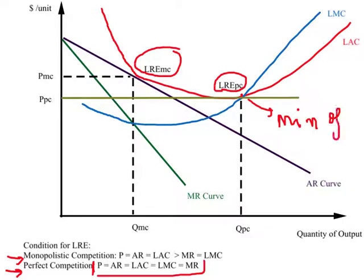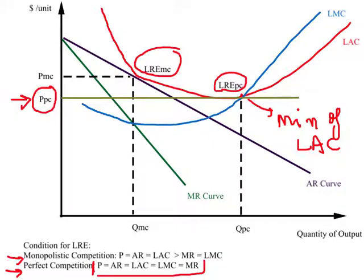Long-run equilibrium for a firm under perfect competition is at the minimum of LAC, where the marginal cost curve equals the average cost curve. Taking this point to the vertical axis gives the price charged by a firm under perfect competition. You may remember that this price is the same as average revenue, which equals marginal revenue. So at long-run equilibrium for perfect competition: price equals average revenue equals long-run average cost equals long-run marginal cost equals marginal revenue.